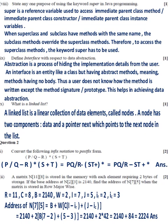Therefore, to access the superclass methods, the keyword super has to be used. Part 9: Abstraction is a process of hiding the implementation details from the user.